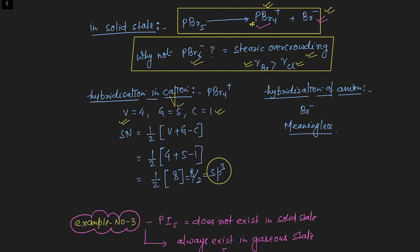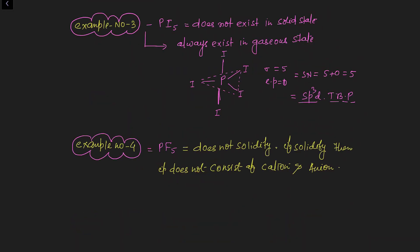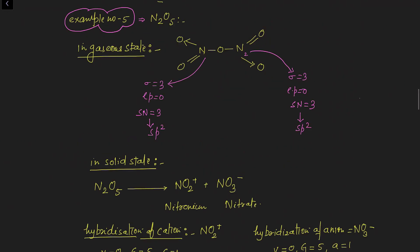Example three: PI5 (phosphorus pentaiodide). This compound does not exist in solid state; it only exists in gaseous state like other phosphorus halides. Therefore it shows only one type of hybridization — sp3d — in gaseous state only.